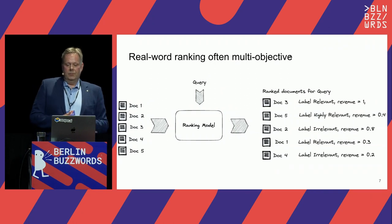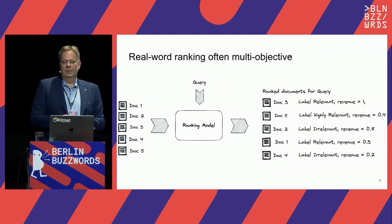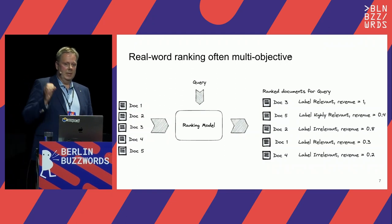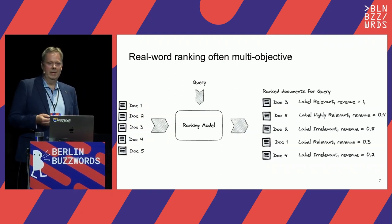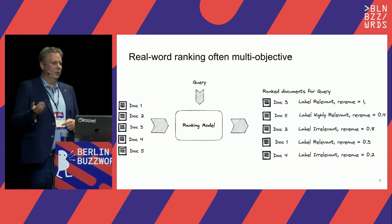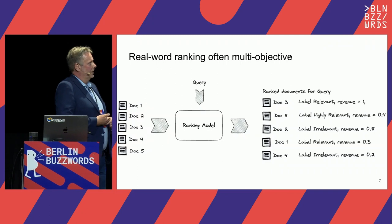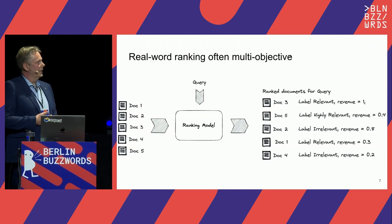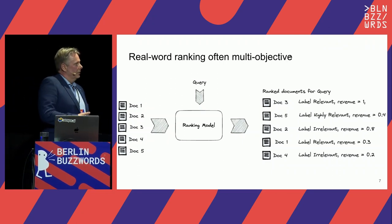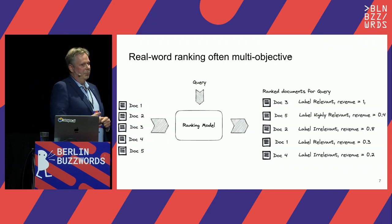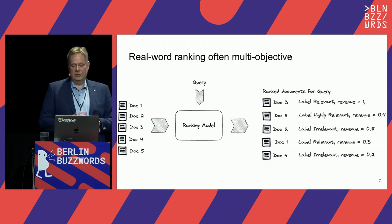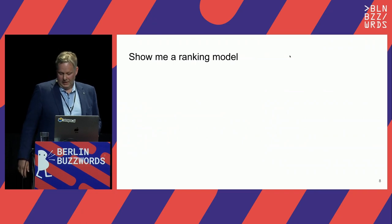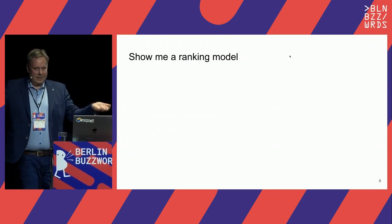I also want to mention that in the real world you might have multi-objective optimization problems, because it might not only be about core relevancy. Many of you are working in e-commerce search, where other things also influence ranking. For example, what is the revenue if the user actually buys document five or document three, which might in some cases impact the ranking — not only the textual matching.